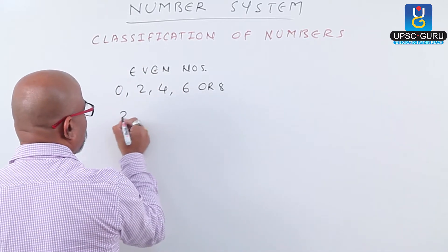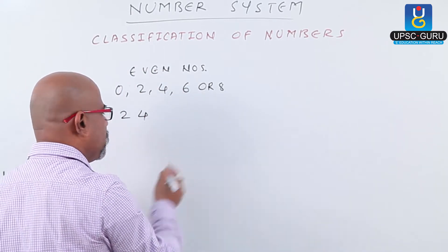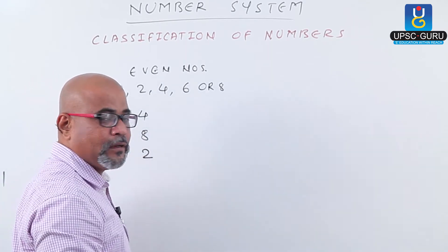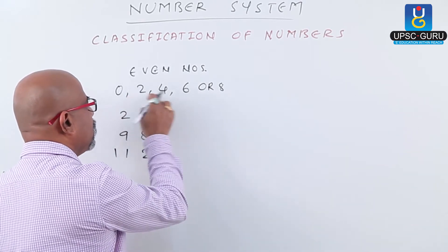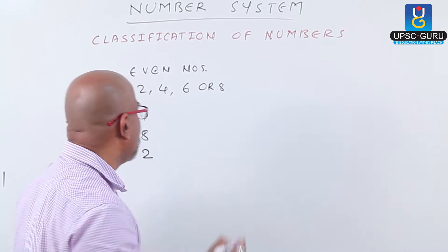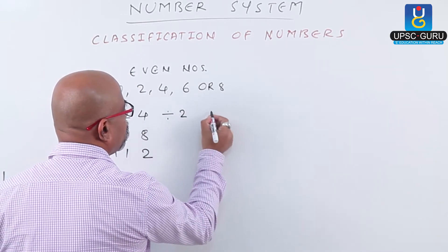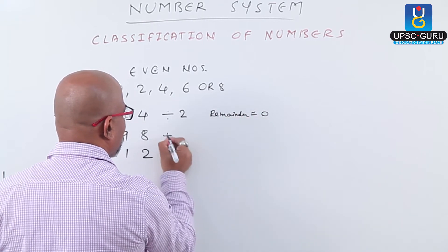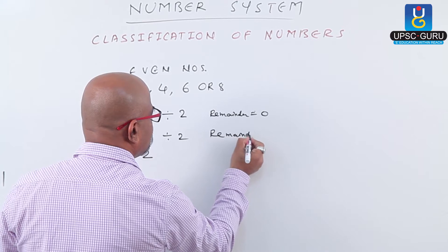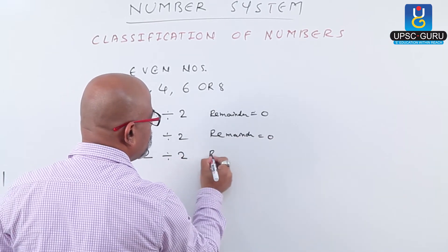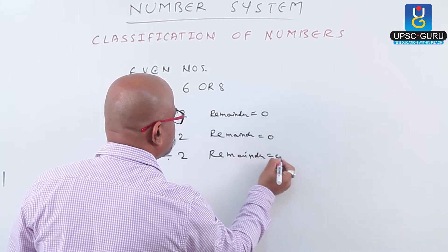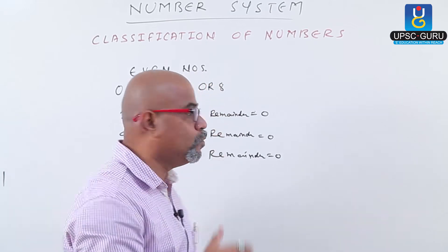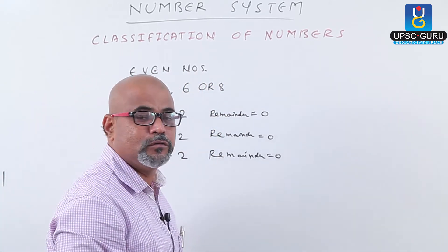Let us take some examples. We have 24 — last digit 4, even number. 98 — even number. 112 — even number. Here the last digits are 4, 8, and 2, so they are called even numbers. If we divide any of these numbers by 2, we get remainder equals to 0. That means when we divide even numbers by 2, we always get remainder equals to 0.